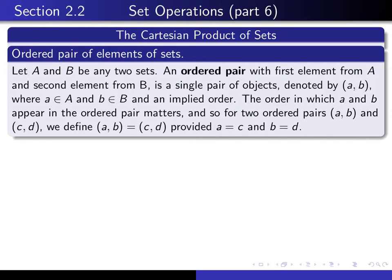So accordingly, if we have two ordered pairs, (a, b) and (c, d), then we define them to be equal precisely if the first components, a and c, are equal and the second components, b and d, are equal.